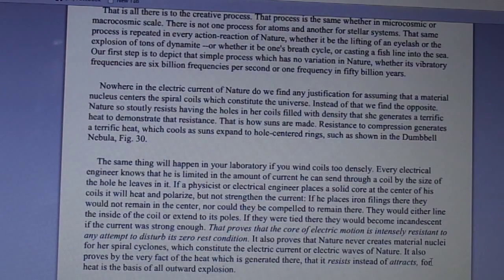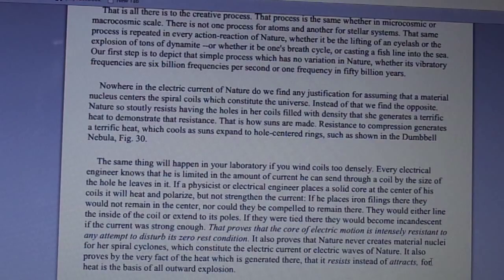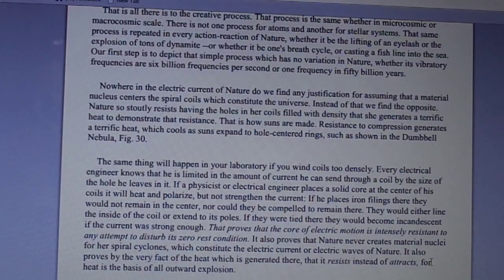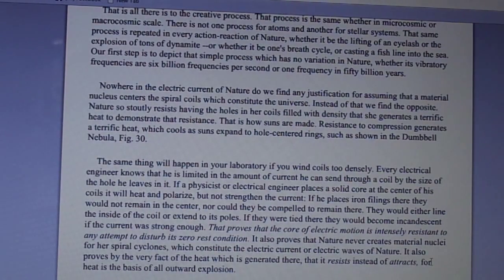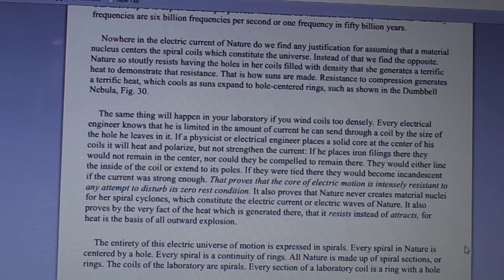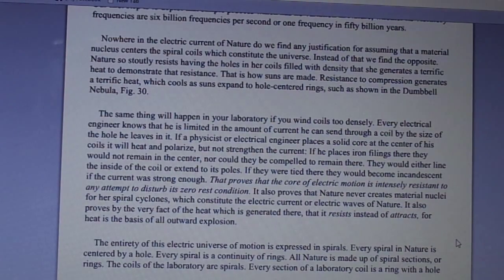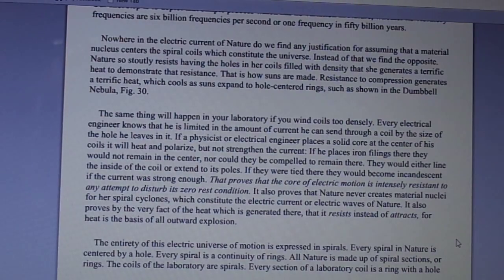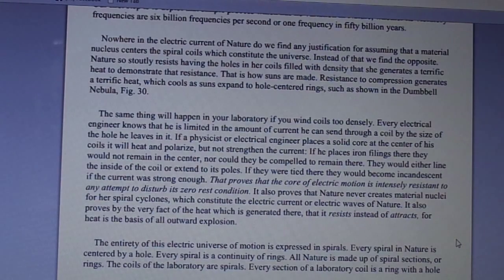If a physicist or electrical engineer places a solid core at the center of his coils, it will heat and polarize but not strengthen the current. If he places iron filings, they would not remain in the center nor could they be compelled to remain there. They would either line the inside of the coil or extend to its poles. If they were tied there, they would become incandescent if the current was strong enough. That proves that the core of electric motion is intensely resistant to any attempt to disturb its zero rest condition. It also proves that nature never creates material nuclei for her spiral cyclones which constitute the electric current or electric waves of nature. It also proves by the very fact of the heat which is generated there that it resists instead of attracts, for heat is the basis of all outward explosion.